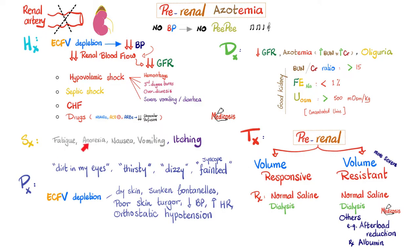General symptoms of kidney failure include fatigue, anorexia, nausea, vomiting, and itching. Symptoms of volume depletion include intense thirst, dizziness, fatigue, and syncope. Physical exam signs of volume depletion include dry skin, sunken fontanelles in neonates, poor skin turgor (skin tenting), hypotension, reflex tachycardia, and orthostatic hypotension — blood pressure drops significantly upon standing because of low effective arterial blood volume.